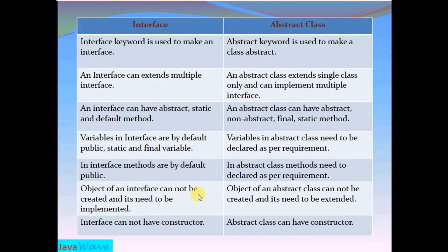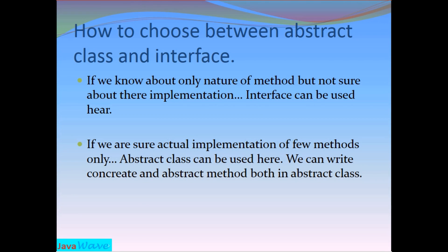An object of an interface cannot be created directly — it needs to be implemented. We cannot create an object of an interface using the 'new' keyword; it needs to be implemented by another Java class. Similarly, an object of an abstract class also cannot be created directly — it needs to be extended. Additionally, an interface cannot have a constructor, whereas an abstract class can have a constructor. These are the main differences between abstract class and interface.